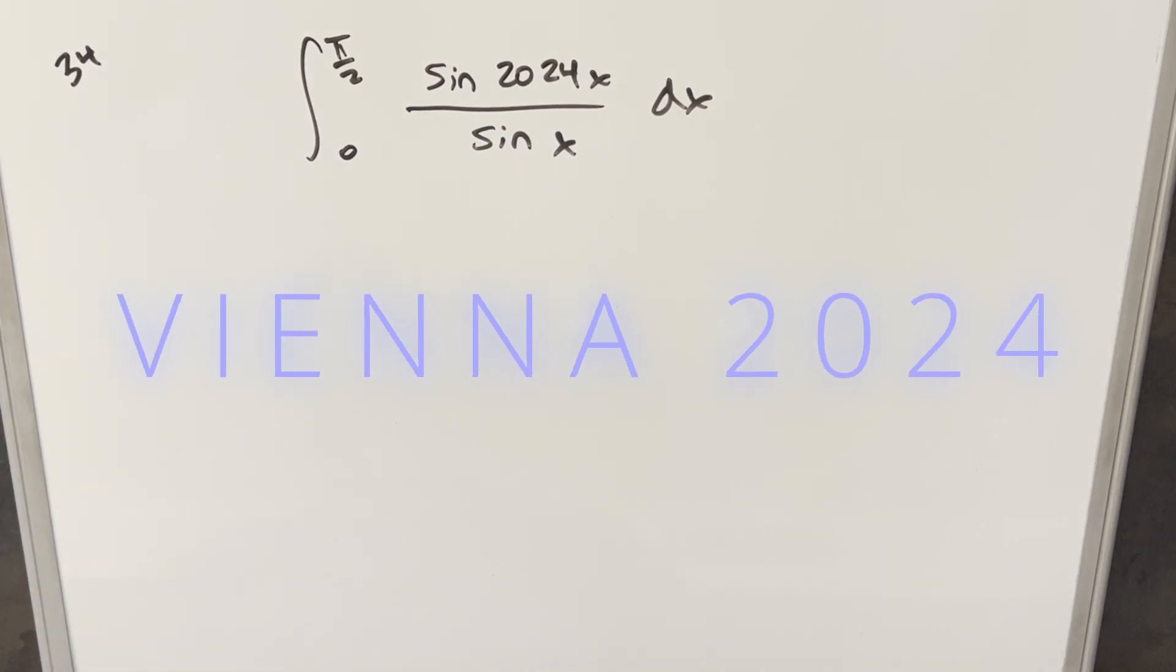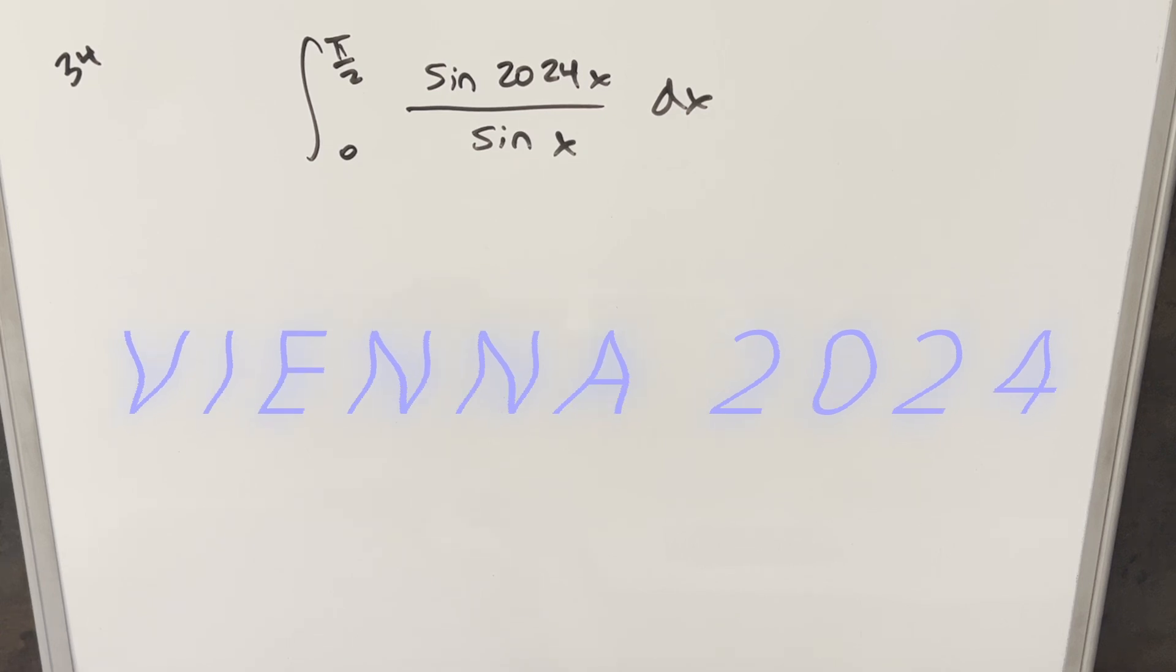Okay, we have another integral. This one's from the Vienna integration B2024, problem 34. You have the integral from 0 to π/2 of sin(2024x) over sin(x) dx.